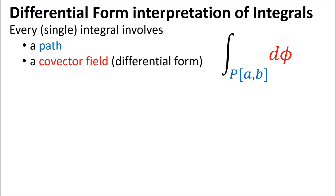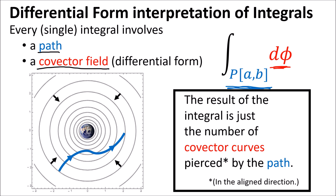As a reminder, the differential form interpretation of integrals tells us that every integral involves a path and a covector field, also called a differential form. The path is indicated with the endpoints, and the covector field — which is like a set of contour curves — is written here. We compute the integral by counting the number of covector curves that the path pierces: plus one when the path direction is aligned with the covector orientation, and minus one when it's opposite.